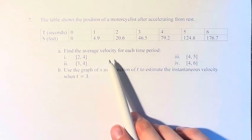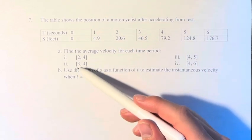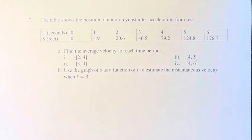We're asked to find the average velocity for each time period: 2 to 4, 3 to 4, 4 to 5, and 4 to 6.